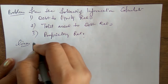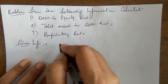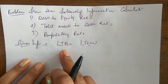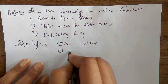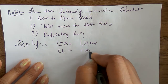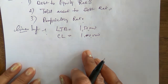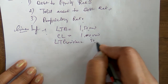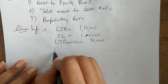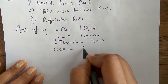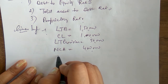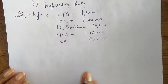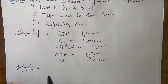Given information: long-term borrowings = ₹1,50,000; current liabilities = ₹1,00,000; long-term provisions = ₹50,000; non-current assets = ₹4,00,000; current assets = ₹2,00,000. We need to calculate all three ratios.